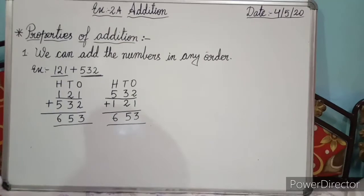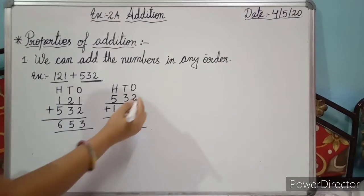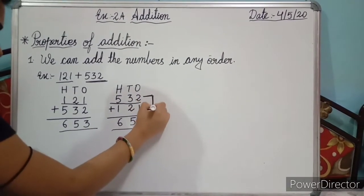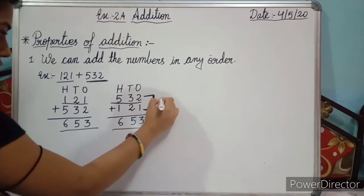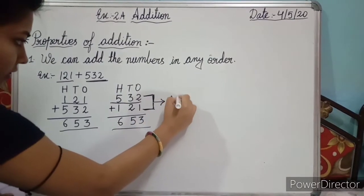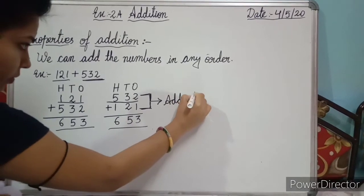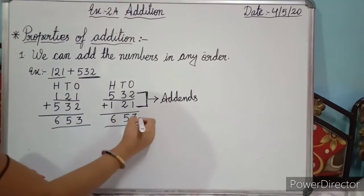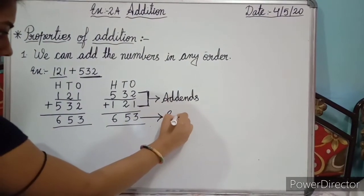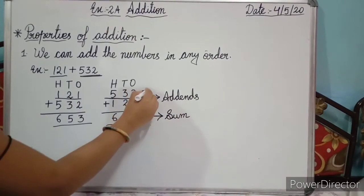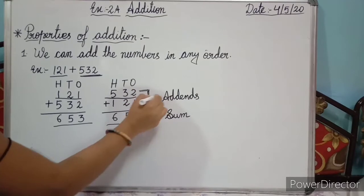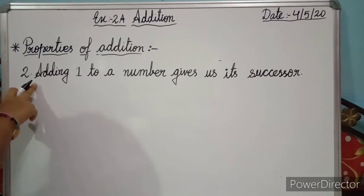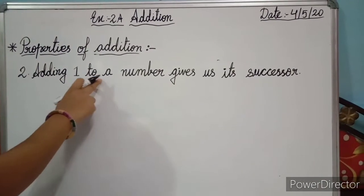In addition, the numbers that are added are called addends. Here is one number, here is the second number — the numbers which are added are called addends. And the answer is called the sum.